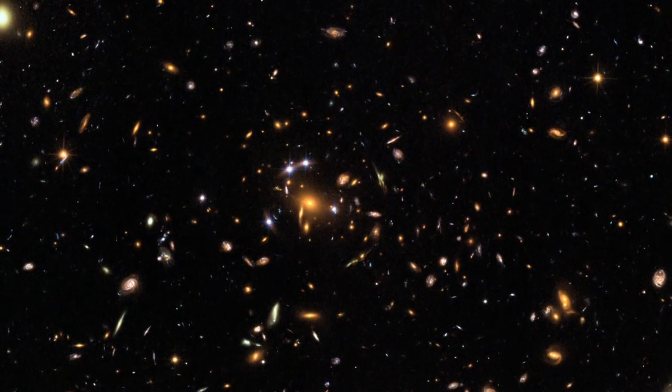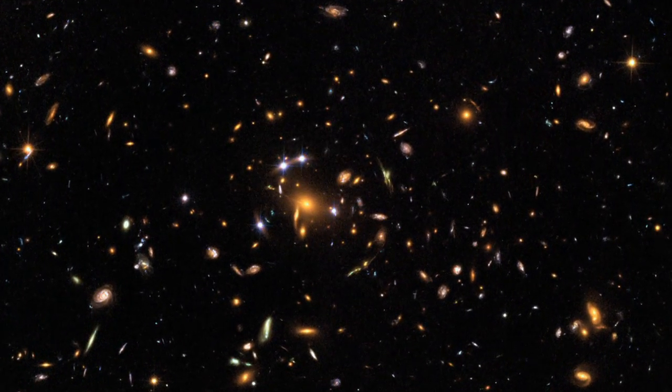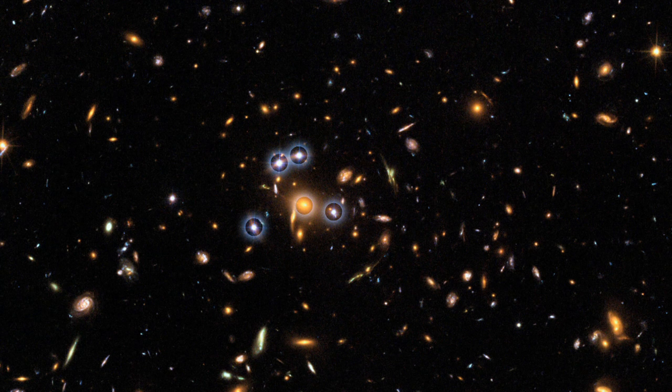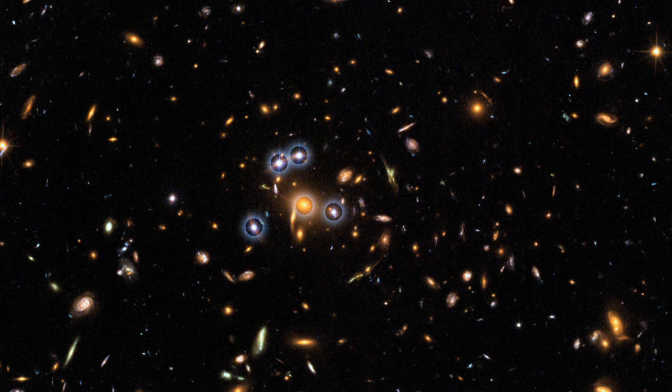This isn't the only intriguing effect that gravitational lensing can produce. Take these five quasars, photographed by Hubble back in 2006. They all look very similar and close together. Perhaps a little too similar.